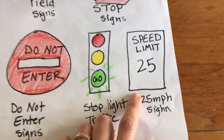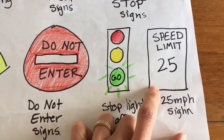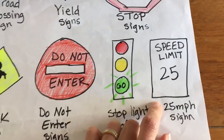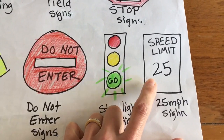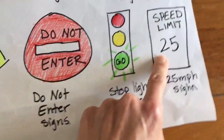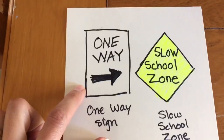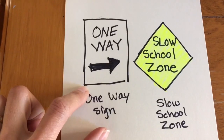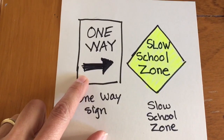Speed limit sign — you probably see these all the time driving around in your car, and speeds will vary. In school zones, speeds tend to be slower. This one means 25 miles an hour. One way sign — this means all traffic is going one way on the street, usually the way the arrow is pointing.